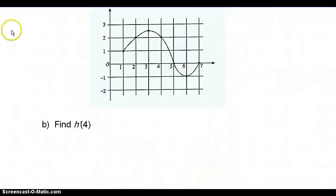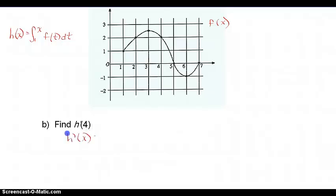Now they want h prime of 4. Write the definition for h again — the integral from 1 to x of f of t dt — and show the AP reader that you understand how to find h prime of x. At least once on whichever part first asks for the derivative, show them you understand this relationship, because the burden of proving you understand what's going on is on you, not on them to infer it from the right answer.